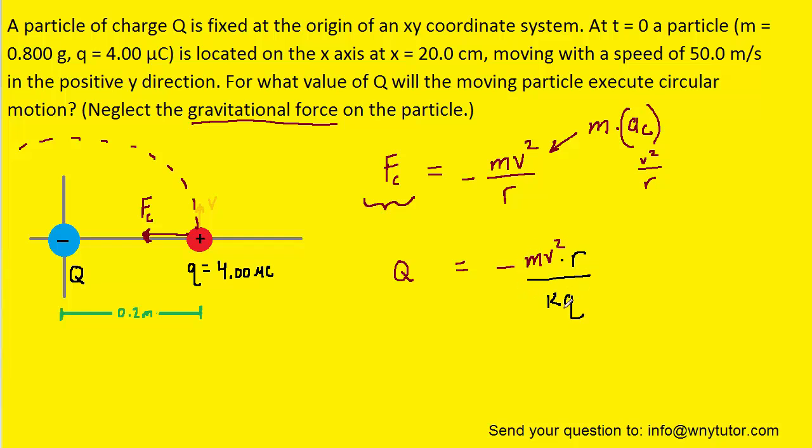So really at this point it's just a matter of plugging in the known values. Notice that the mass, although it was given to us, it was given to us in grams. So we have to make sure that we call that mass 0.8 times 10 to the minus 3. That way we can convert the grams into the standard unit of kilograms. As mentioned the radius is 0.2 meters. We've already done that conversion.